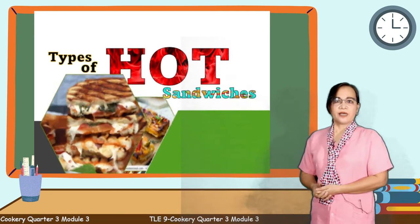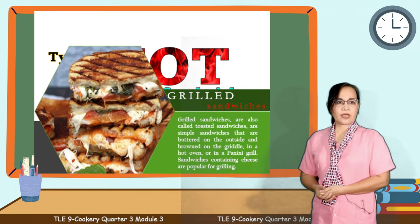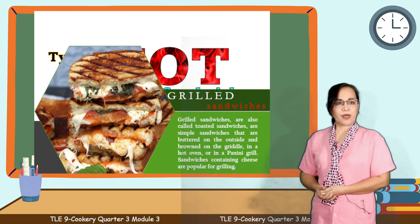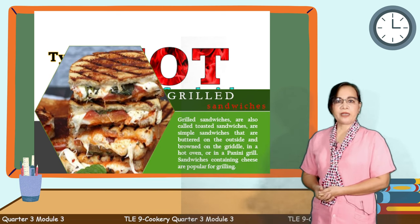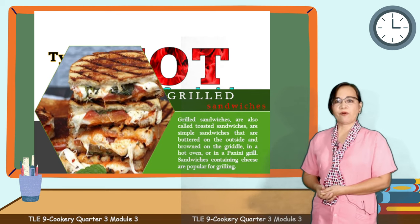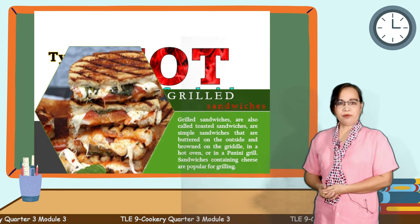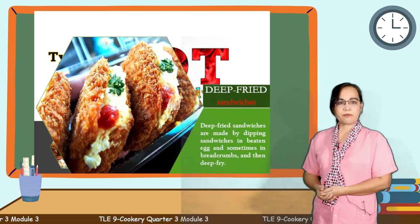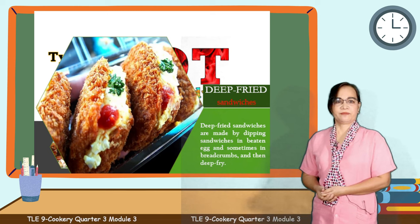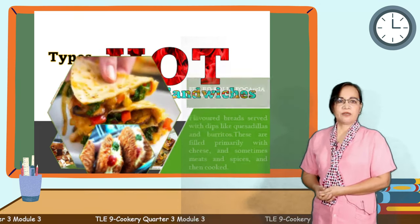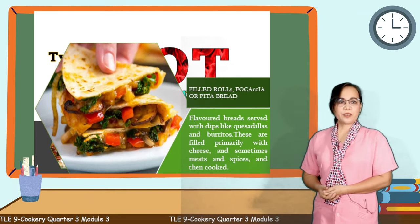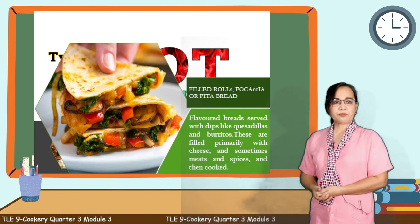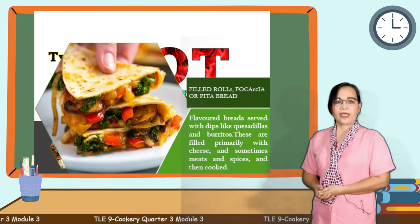Number three, grilled sandwiches, also called toasted sandwiches, are simple sandwiches that are battered on the outside and browned on the griddle, in a hot oven, or in a panini grill. Sandwiches containing cheese are popular for grilling. Number four, deep-fried sandwiches are made by dipping sandwiches in beaten egg and sometimes in breadcrumbs and then deep-frying them. The last kind is filled rolls, focaccia, or pita bread. These are flavored breads served with dips like quesadillas and burritos, filled primarily with cheese and sometimes meats and spices and then cooked.